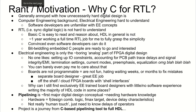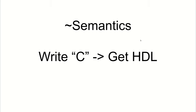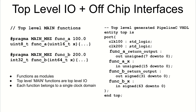Getting right into semantics — we're writing C and getting hardware description out the other side. It makes sense to start with the top-level interface of the design. Function arguments are input ports and function return values are output ports. By specifying a function with the pragma main megahertz, this means the function is main, it's at the top level, and it exposes its ports on the final top module.